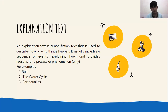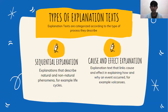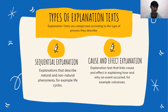Maybe later I'm going to tell you about rain. And then, types of explanation text. Explanation texts are categorized according to the type of process they describe. The first is sequential explanation — explanations that describe natural and non-natural phenomena, for example, life cycles. The second is cause and effect explanation — explanation text that links cause and effects in explaining how and why an event occurred, for example, volcanism.